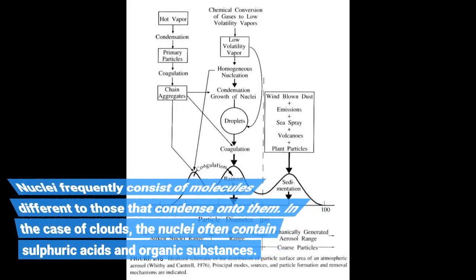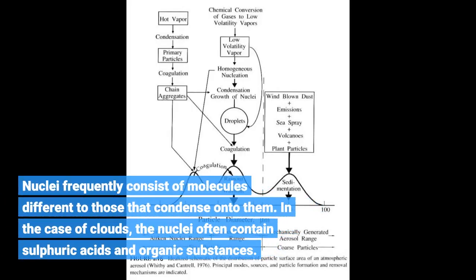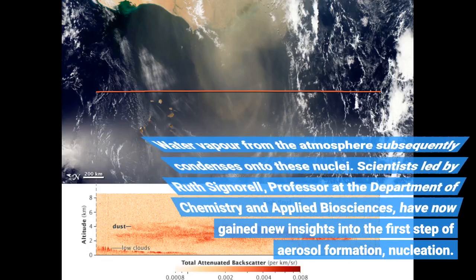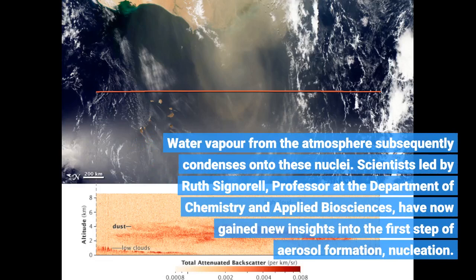Nuclei frequently consist of molecules different to those that condense onto them. In the case of clouds, the nuclei often contain sulfuric acids and organic substances. Water vapor from the atmosphere subsequently condenses onto these nuclei.